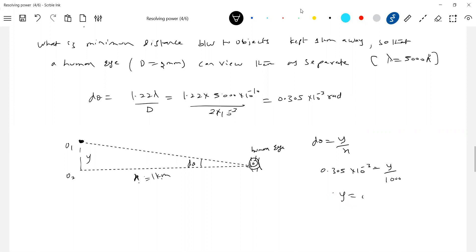So what is y? 0.305 meters, or 30.5 centimeters. Two objects separated by 30.5 centimeters, when viewed from one kilometer, are just resolvable. If you make it 1.1 kilometers, then the human eye says there's only one object, even though two point objects are there.